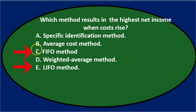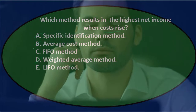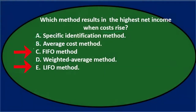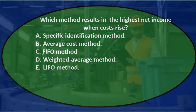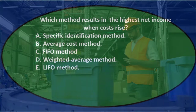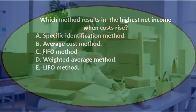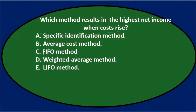You can think through it: if you're selling the first ones first, the first ones were the cheaper ones, that means you're left with the more expensive ones on the balance sheet in inventory. So your inventory is higher under First In First Out. If you're selling the cheaper ones, your cost of goods sold is lower — that's an expense — and revenue minus expenses would be higher. The reverse would be true if costs were going down. So the answer is C, First In First Out, the FIFO method.